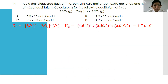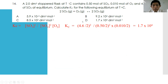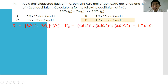Number fourteen: a 2.0 dm³ stoppered flask at T°C contains 0.5 mol SO₂, 0.10 mol O₂, and 4.6 mol SO₃. Calculate Kc. Express Kc = [SO₃]² / ([SO₂]² × [O₂]). Converting moles to concentration: (4.6/2)² / ((0.50/2)² × (0.010/2)). The calculator gives Kc = 1.7 × 10⁴ dm³/mol. The answer is D.